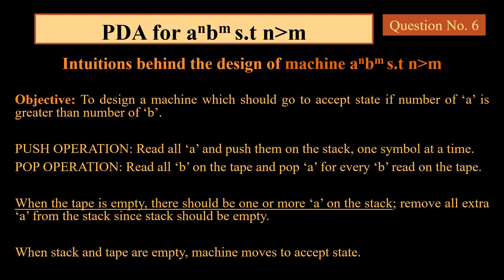Next we move to the second question: aⁿbᵐ such that n is greater than m. The machine should go to the accept state if the number of a's is greater than the number of b's. A push operation is performed for every a read on the tape, one symbol at a time. The moment we encounter b on the tape, the pop operation begins. When the tape is empty — meaning all b's have been read — there should be at least one or more a's remaining on the stack, because we are designing a machine where the number of a's exceeds the number of b's. The condition for acceptance is that both stack and tape must be empty, so we must pop all remaining elements from the stack to reach the accept state.